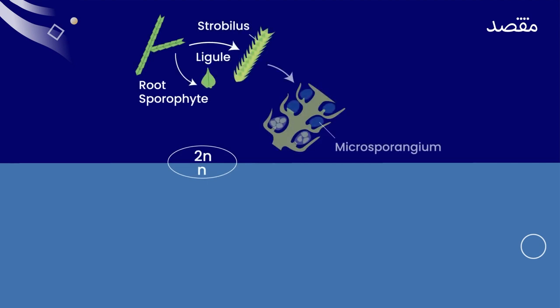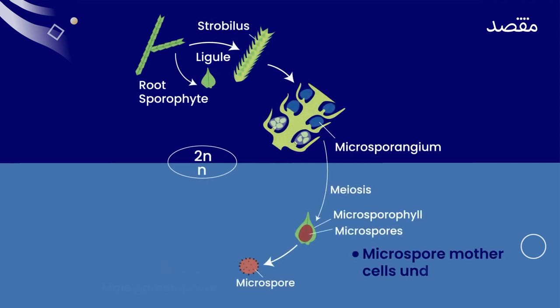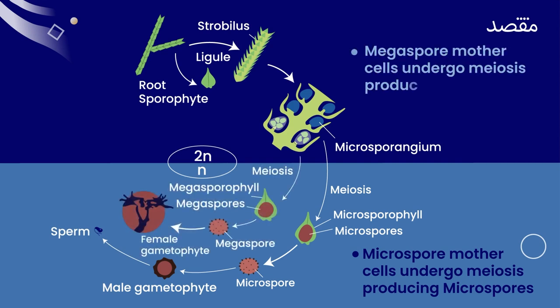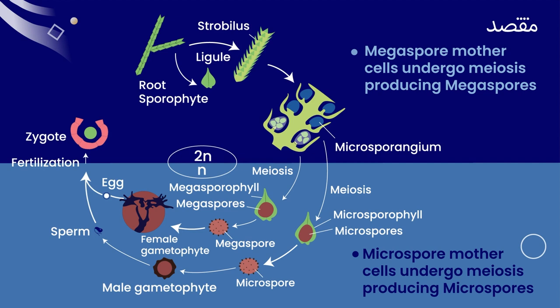Ager lycopodium ke life cycle ki baat ki jaye, toh microsporophyll pe present enthridium me, microspores haploid sperms produce kerte hain. Aur megasporophylls pe present archigonia me, megaspores haploid eggs produce kerte hain. These eggs and sperms undergo fertilization to form zygote, which develops into a younger sporophyte. This young sporophyte develops to form adult sporophyte, containing roots and leaves. Spore mother cells in the sporengia then produce two different types of spores, which develop into gametophyte and the life cycle is completed.